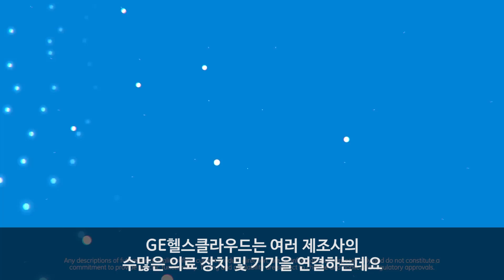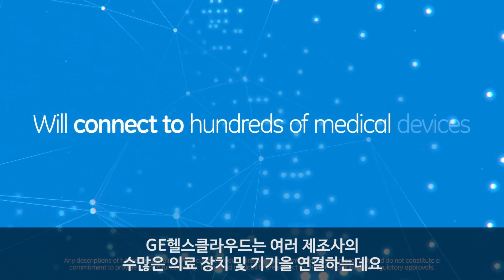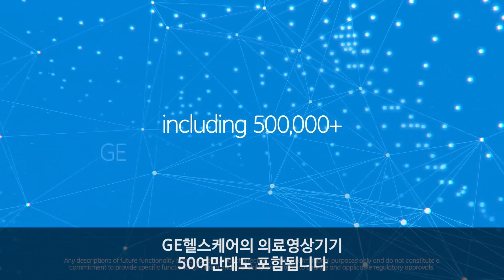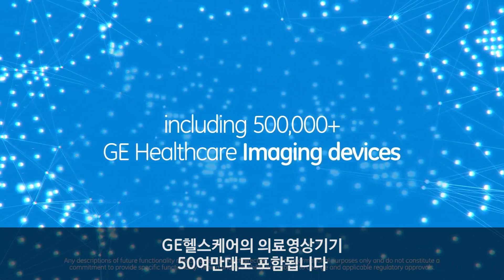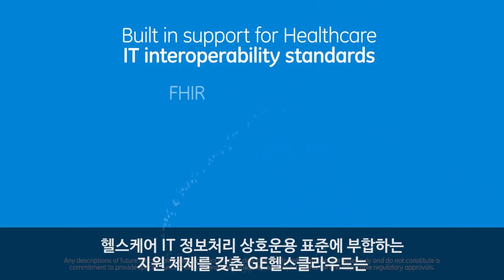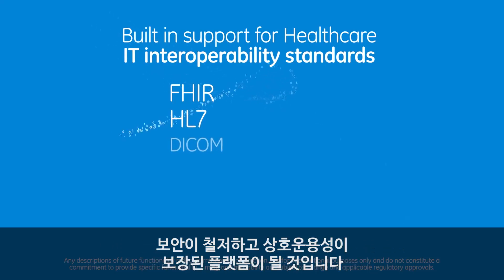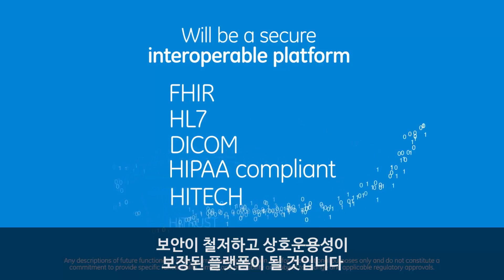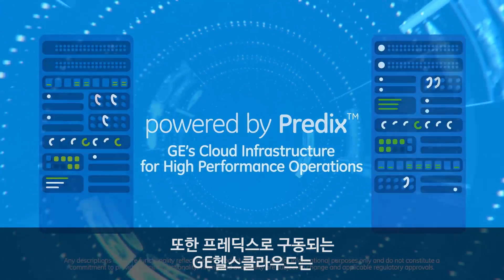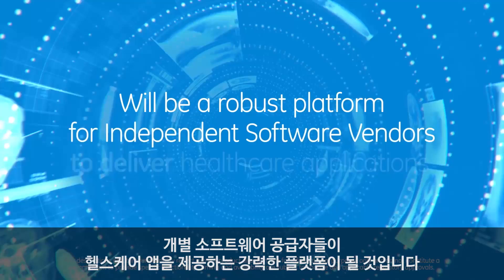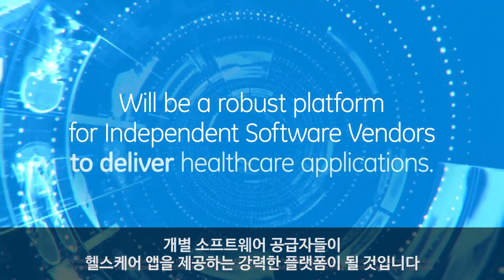The GE Health Cloud will connect to hundreds of medical devices and machines from multiple vendors, including 500,000 plus GE Healthcare imaging devices. With built-in support for healthcare IT interoperability standards, the GE Health Cloud will be a secure, interoperable platform. And powered by Predix, the GE Health Cloud will be a robust platform for independent software vendors to deliver healthcare applications.